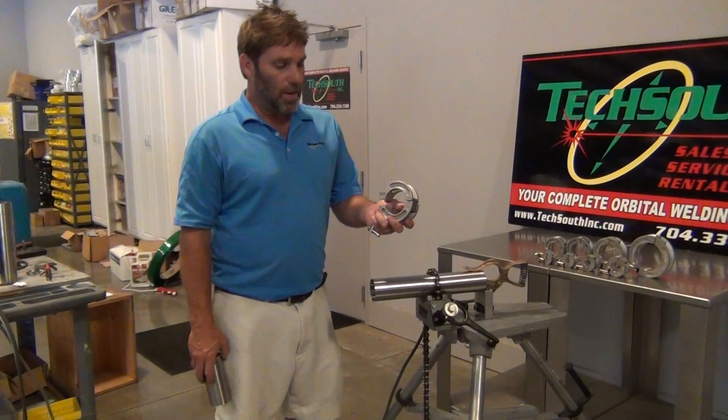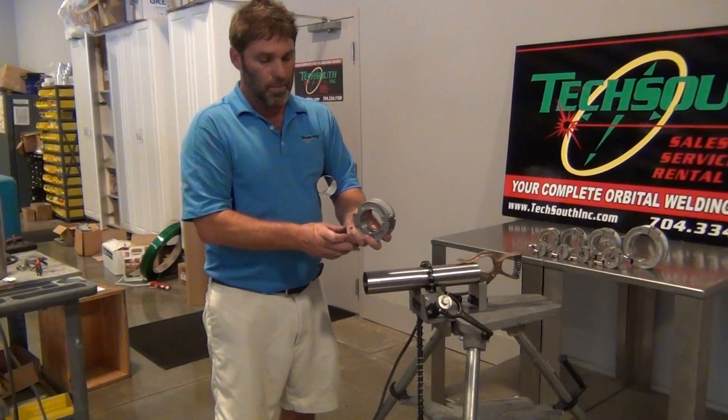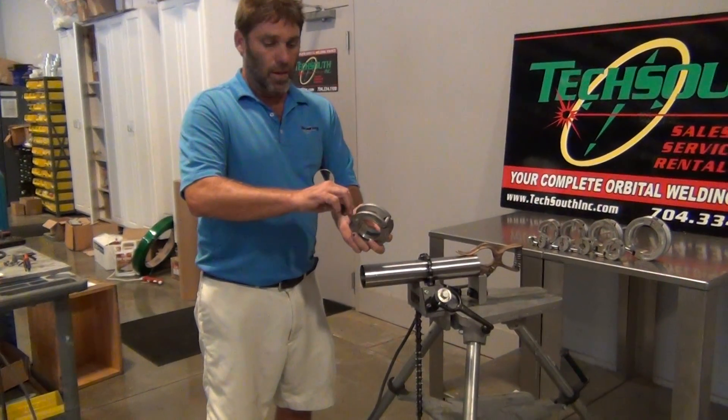They're pretty simple how they work. They hinge so they go right around the pipe. You can lock it down here with your wing nut assembly.